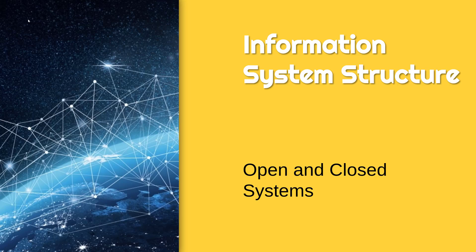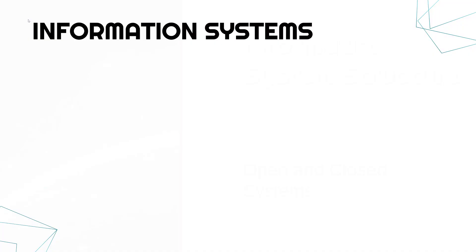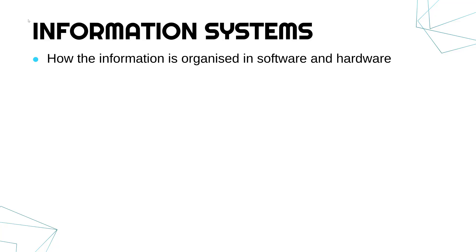We're looking at two key terms as they relate to information systems. Information systems is a very vague term — it covers any bunch of software and hardware which helps organize information. For instance, a website is an information system, a database is an information system. We talk about management information systems, things like BromCom, SIMS, or ARBA — things which your school might use to take registers. Really, anything which organizes information.